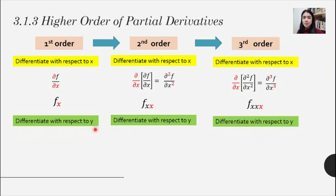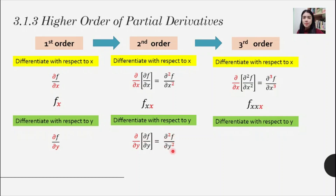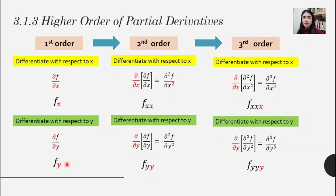Now let's look at what happens when we differentiate with respect to y. For the first order, write ∂f/∂y. For the second order, take the answer of the first order, put it inside the bracket, and rewrite it as ∂²f/∂y². For the third order, apply the same concept. In the alternative subscript notation: first order is fy, second order is fyy, and third order is fyyy.